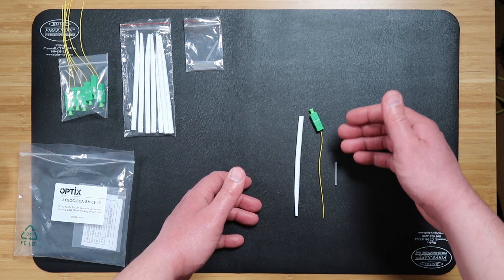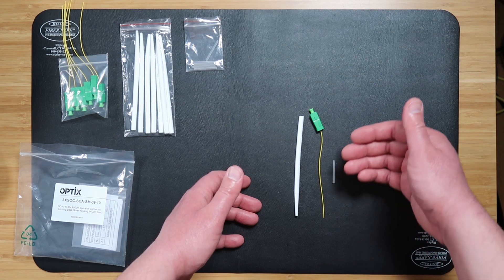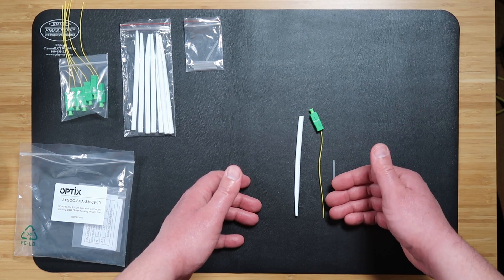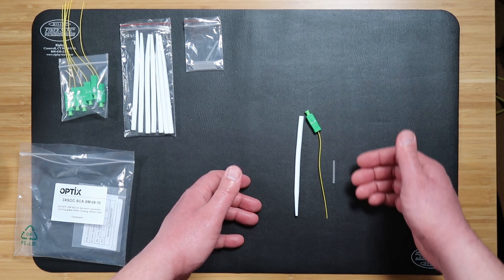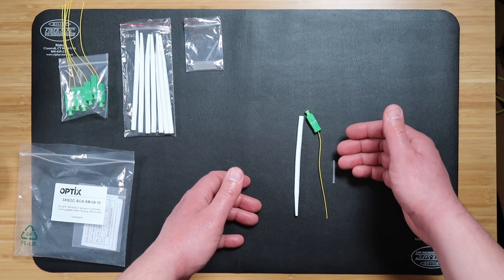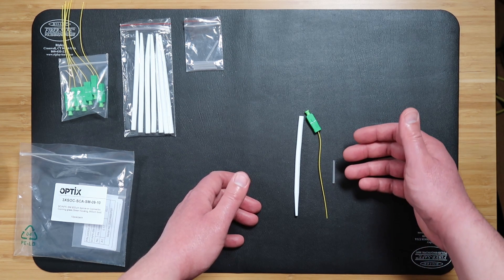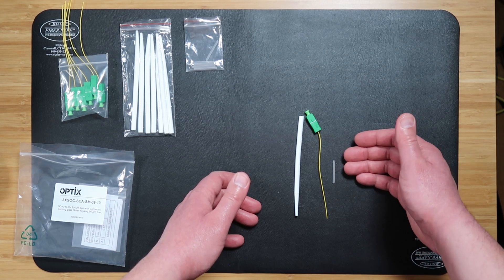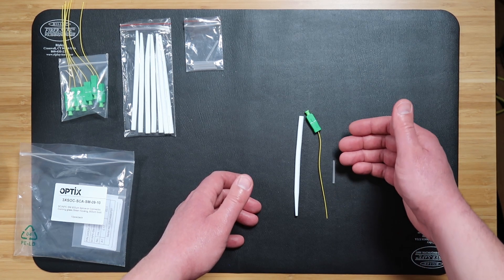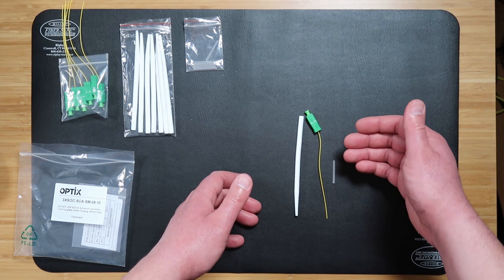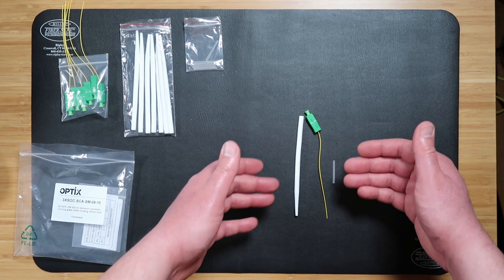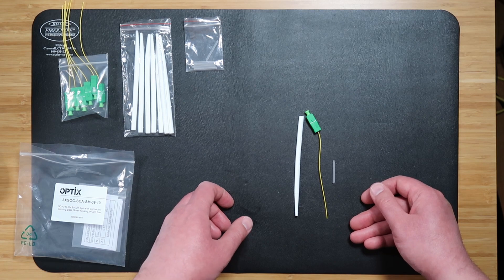In addition to the advantage of having multiple attempts if you make a mistake while splicing, the thing that I particularly like about these is that they can be used with pretty much any fusion splicer. Many splice-on connectors require specific holders for the termination process and must be compatible with only certain fusion splicers, but these will work in pretty much any splicer that I've seen.